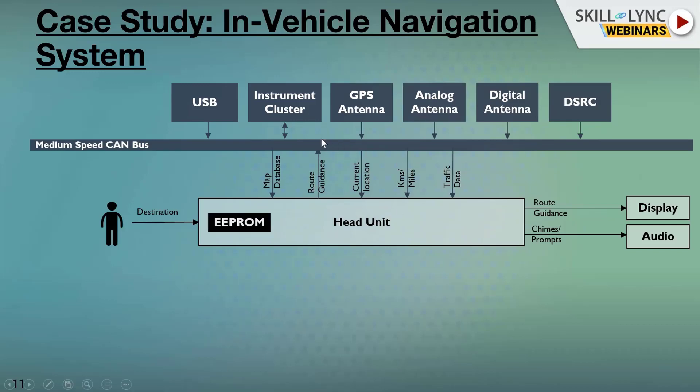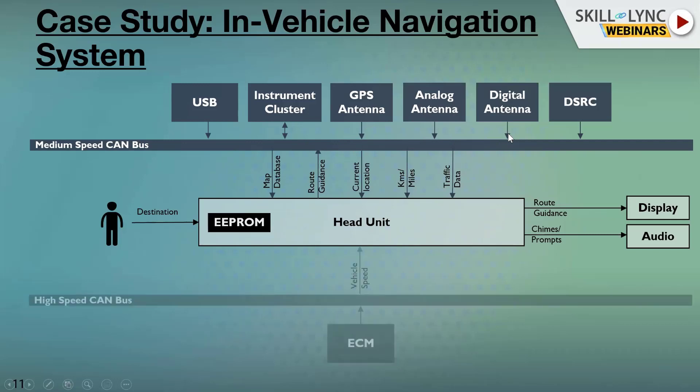That information comes from the medium speed bus. From the high speed bus, you get vehicle speed — mostly because if you're going above a certain speed, it will chime or show a red sign on screen that you're going a little above the limit.